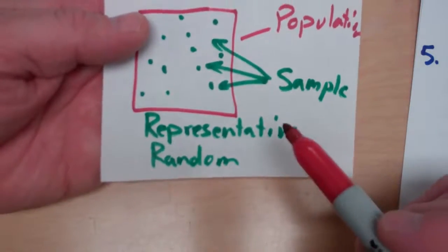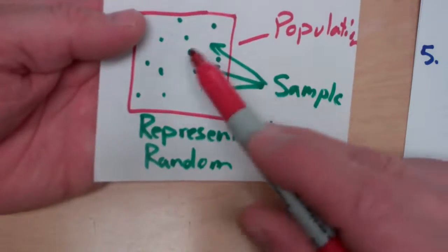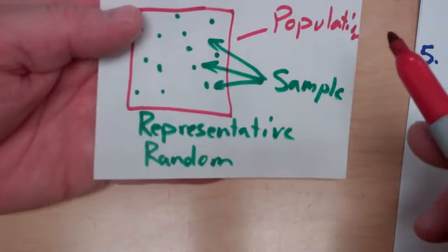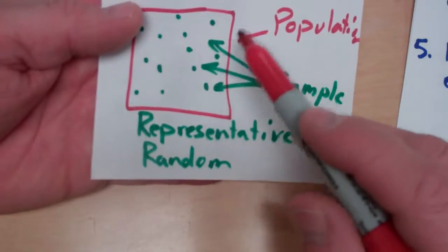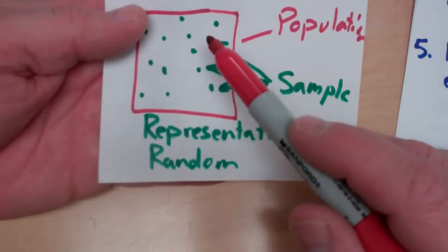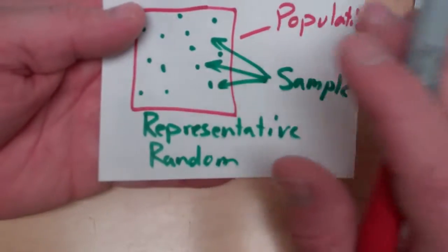And the thing about samples that you should understand is it needs to be representative of the population. So I can't just choose my three best friends and say that's going to be the population I talked to. We need to be talking to a representative sample that would represent the entire building.